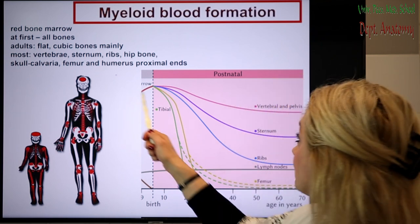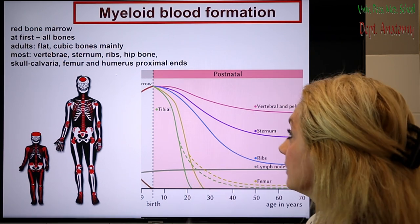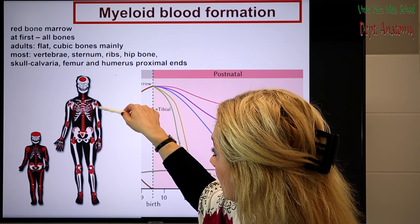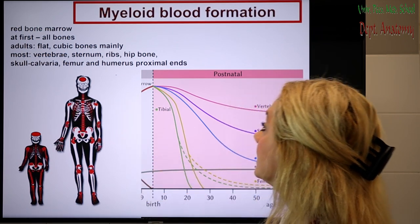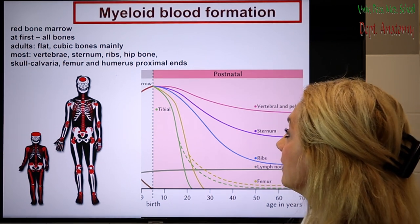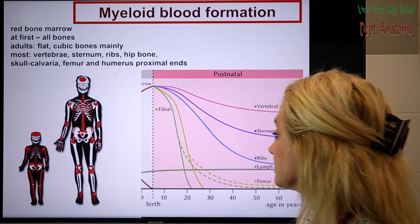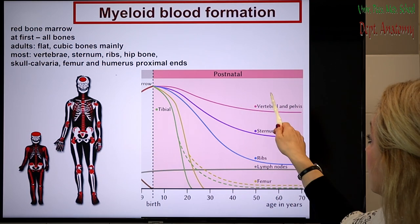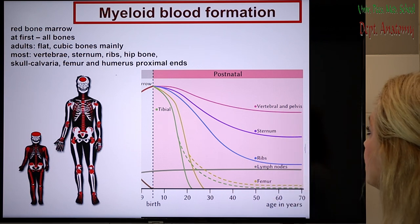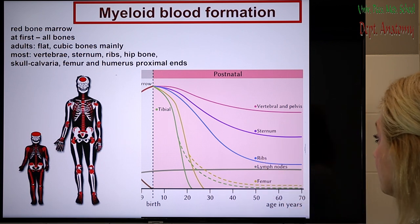Especially the skull, the calvary of the skull, in the ribs, in the vertebrae, in the sternum — mainly flat bones have red bone marrow. The long bones: it's mainly the proximal ends of the humerus and femur. You can see the amounts: vertebrae and pelvic bones produce most of the blood, followed by the sternum.